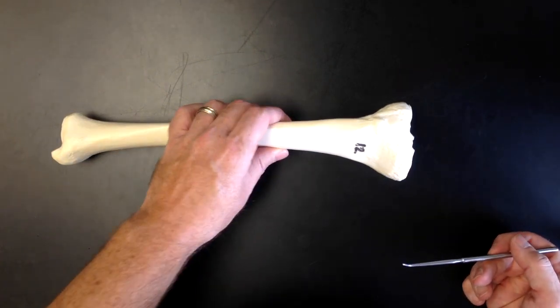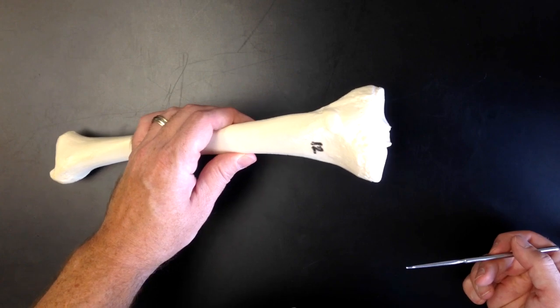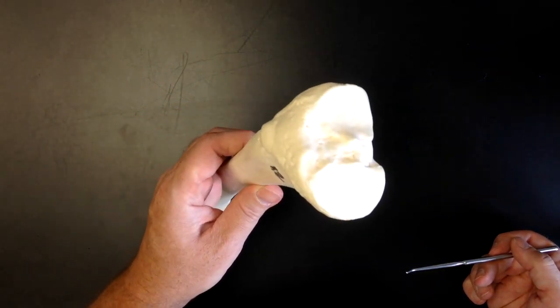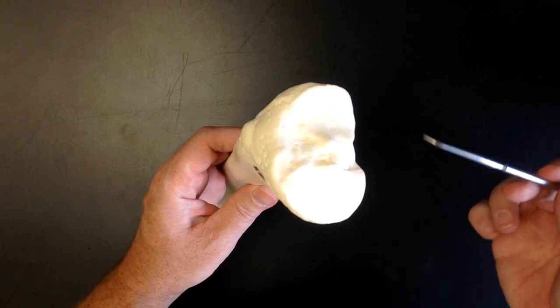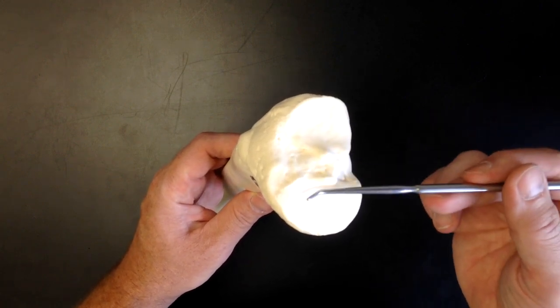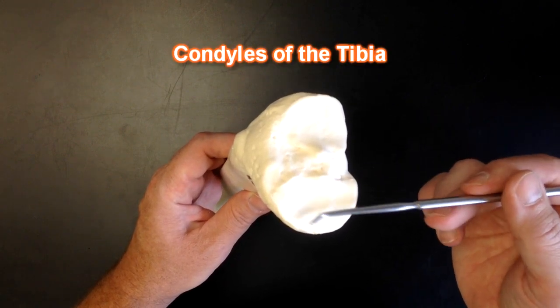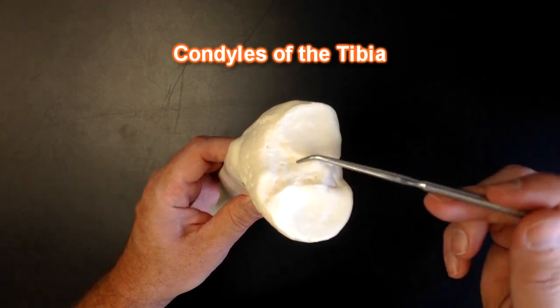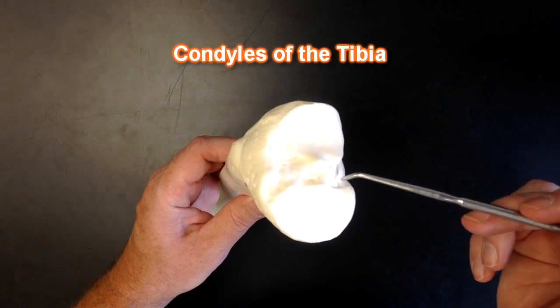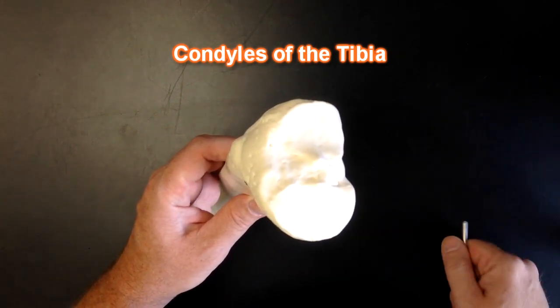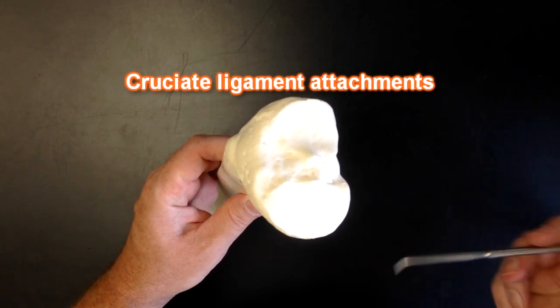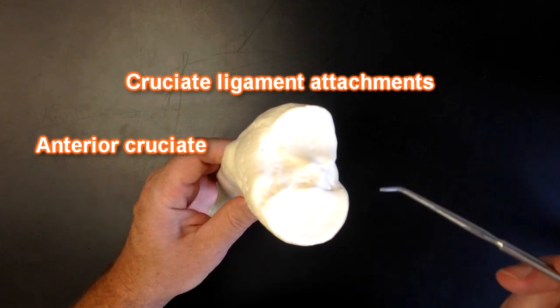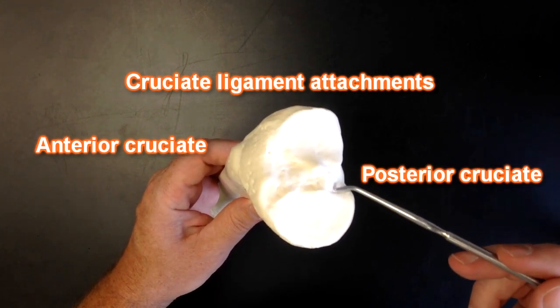Now if I pick the tibia up so that we can see the top of the tibia, we can see smooth articular surfaces. These would be the condyles of the tibia, and we can see some fossae, some indentations here and here. Those would be the sites of attachment for the cruciate ligaments. Anterior cruciate would attach in the front, and then posterior cruciate would attach back here.